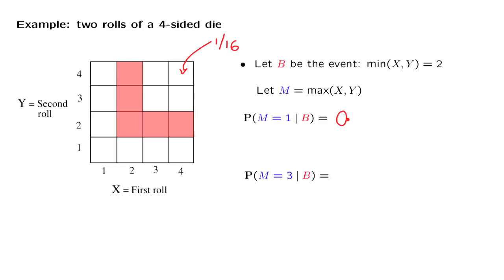Let us now look at the conditional probability that the maximum is equal to 3, given the information that event B has occurred. It's best to draw a picture and see what that event corresponds to.